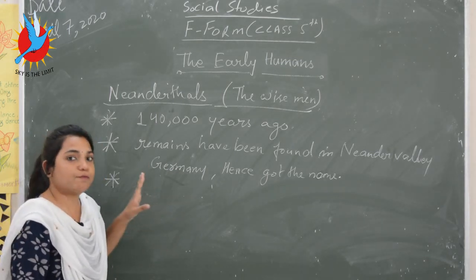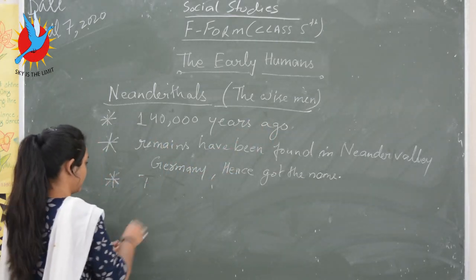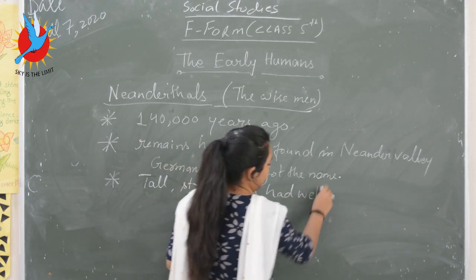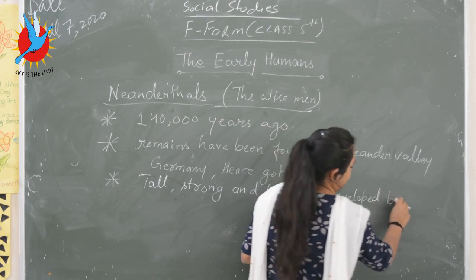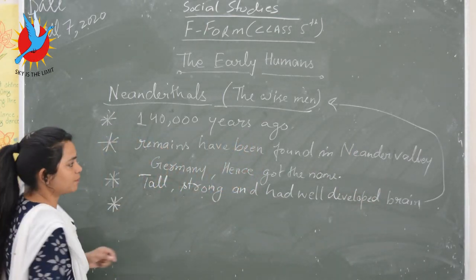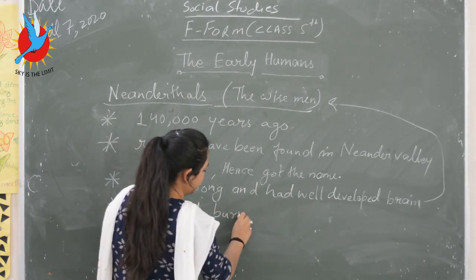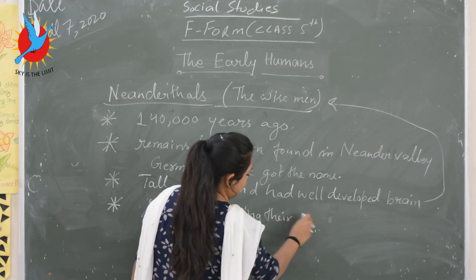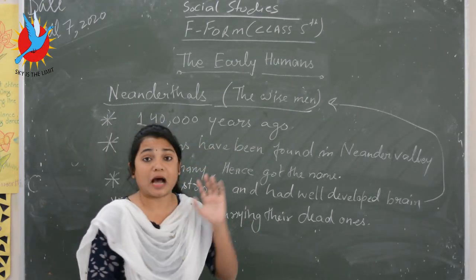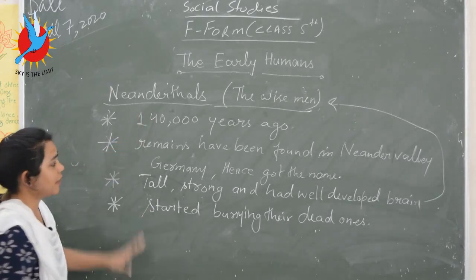Neanderthals were tall, strong, and had a very well-developed brain — that is the reason they got the name Wise Men. One invention they made was burying their dead ones. However, since Neanderthals lived during the Ice Age, the climatic conditions were very harsh and they could not survive, so they got extinct.